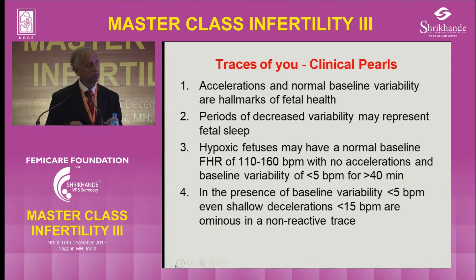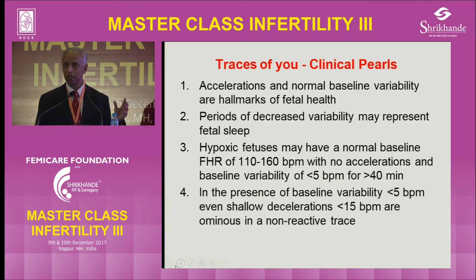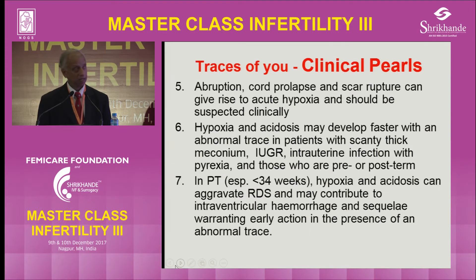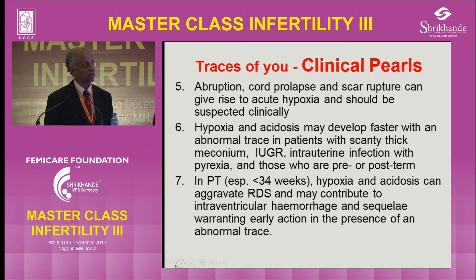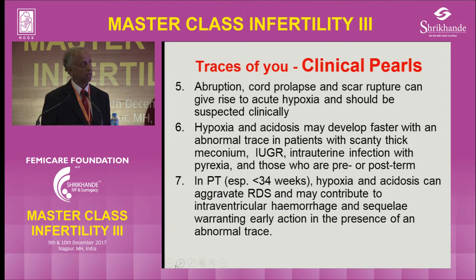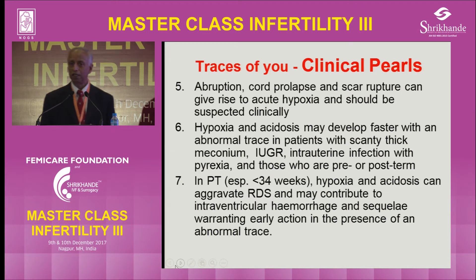In the presence of reduced variability less than 5, shallow decelerations less than 15 are ominous in a non-reactive trace — this is the exception to the rule. Abruption, cord prolapse, and scar rupture can give rise to acute hypoxia and should be suspected clinically. Hypoxia and acidosis may develop faster with an abnormal trace in patients with scanty thick meconium, IUGR, infection, pyrexia, or who are pre- or post-term. In a pre-term baby, hypoxia and acidosis can aggravate RDS and contribute to intraventricular haemorrhage, warranting early action — don't wait too long, deliver as early as possible.